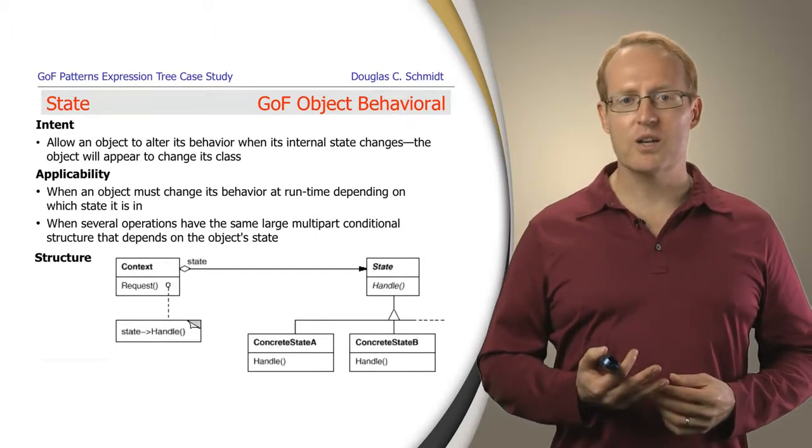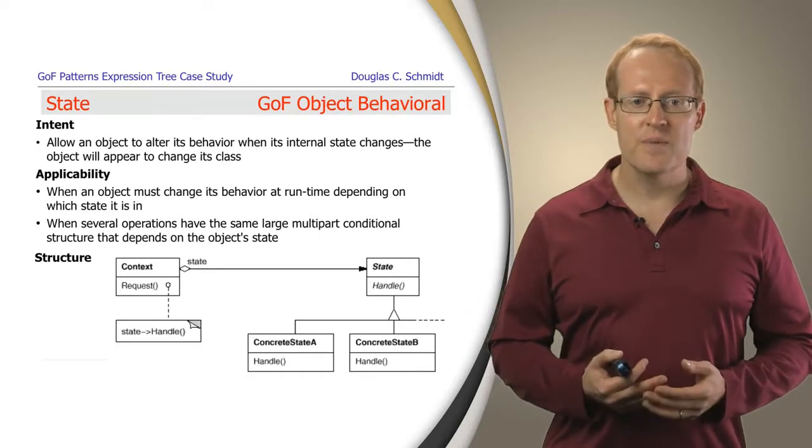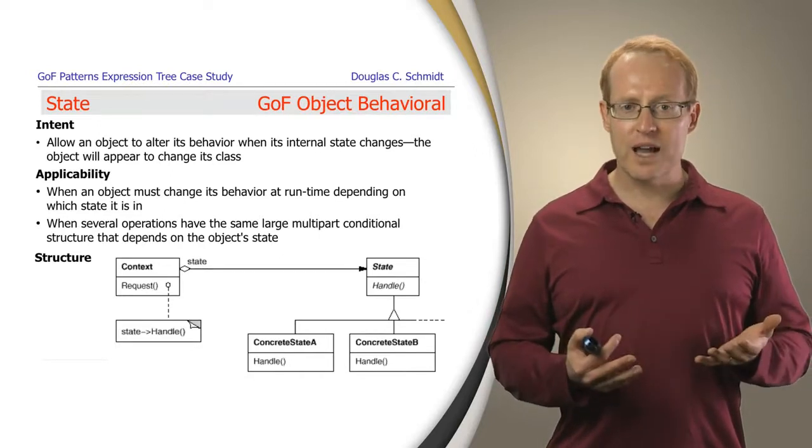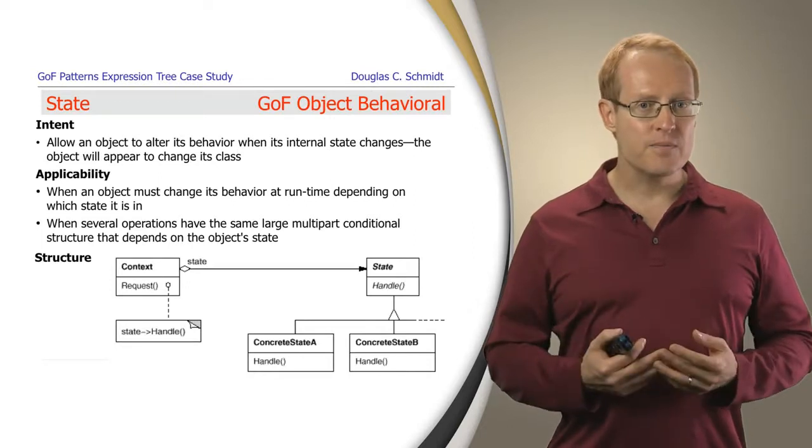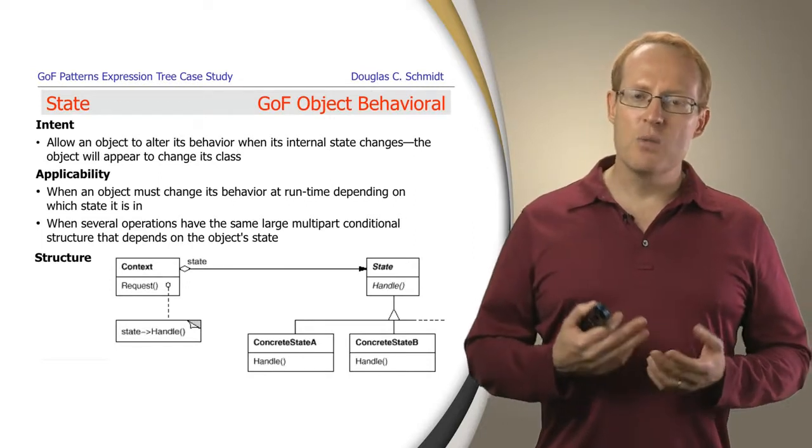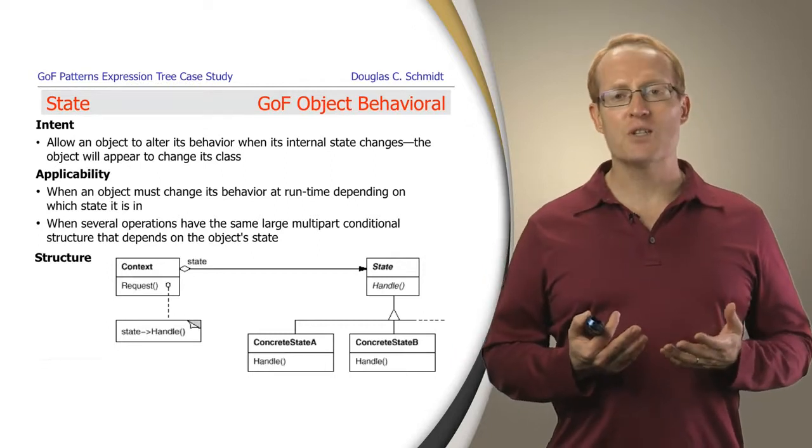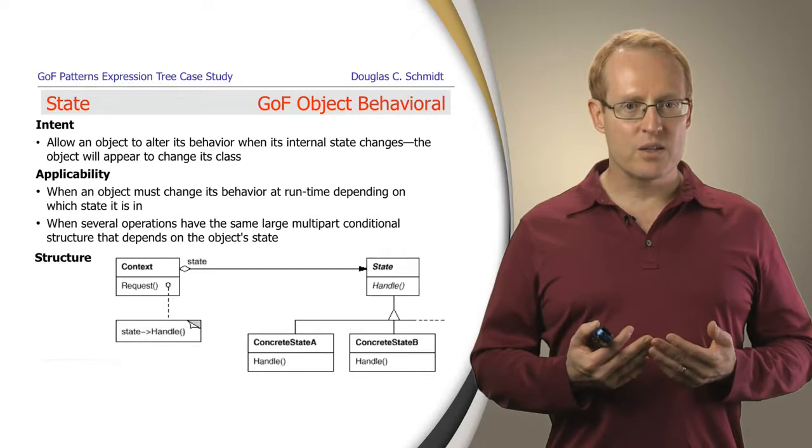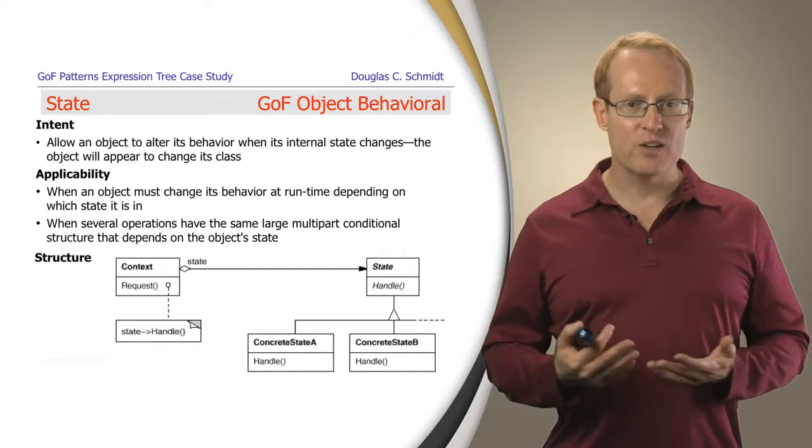You should consider applying this particular pattern under a number of circumstances. You should apply it when an object has to change its behavior at runtime depending on which state it's in. And we'll see this in a second when we look at the example. You might also do this when several operations have some large multi-part conditional structure whose behavior and actions depend on the object's state.